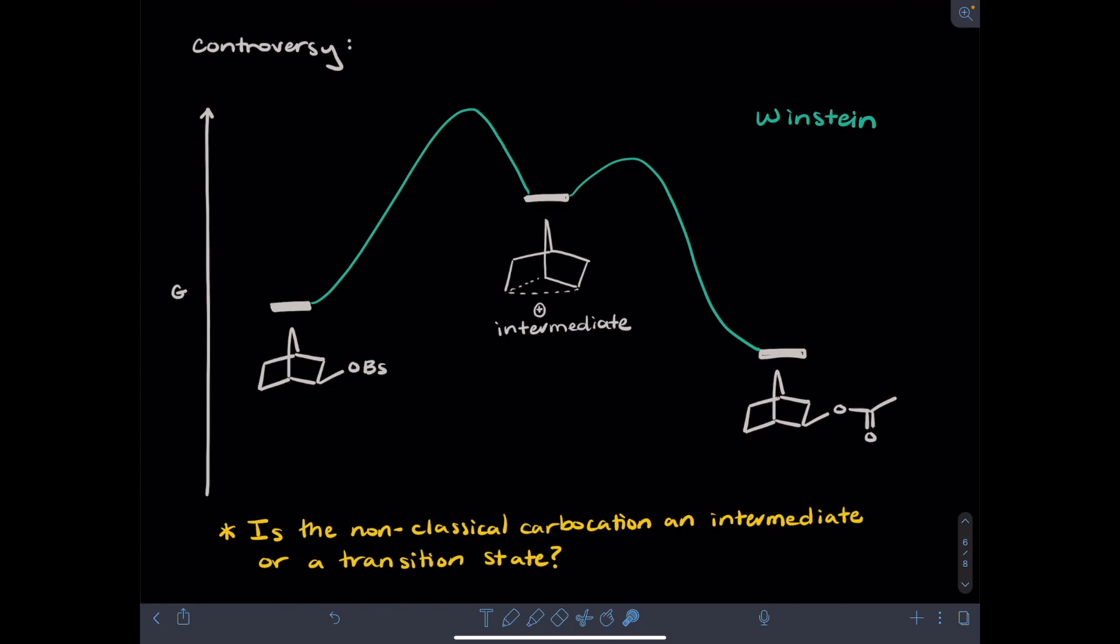So the crux of the debate is, is this structure where there are partial bonds in the carbocation present a transition state, or is it an intermediate? And this debate raged on for decades.